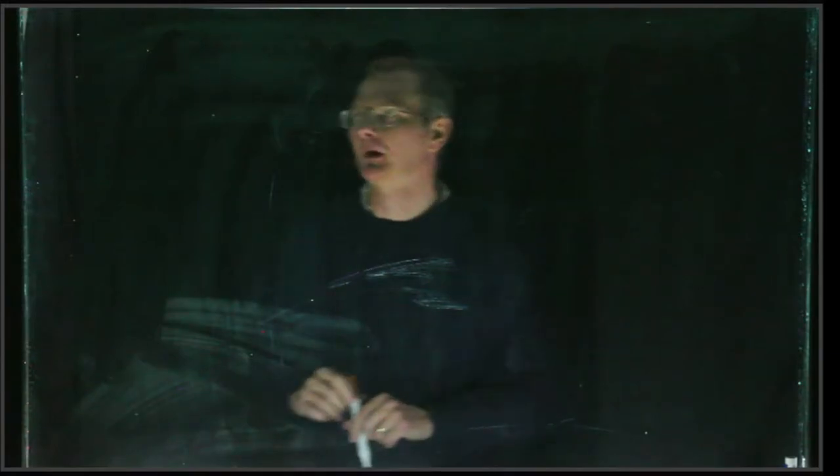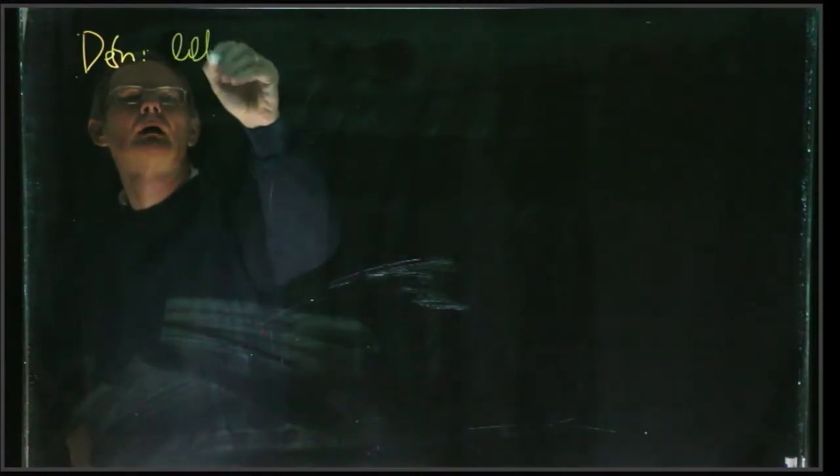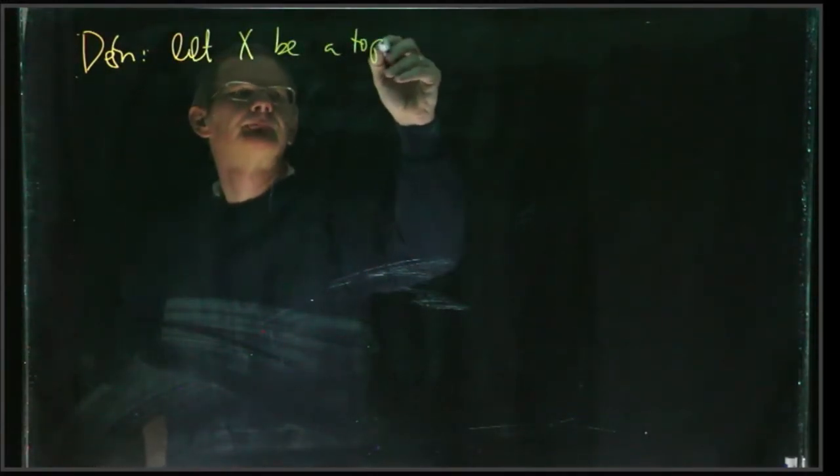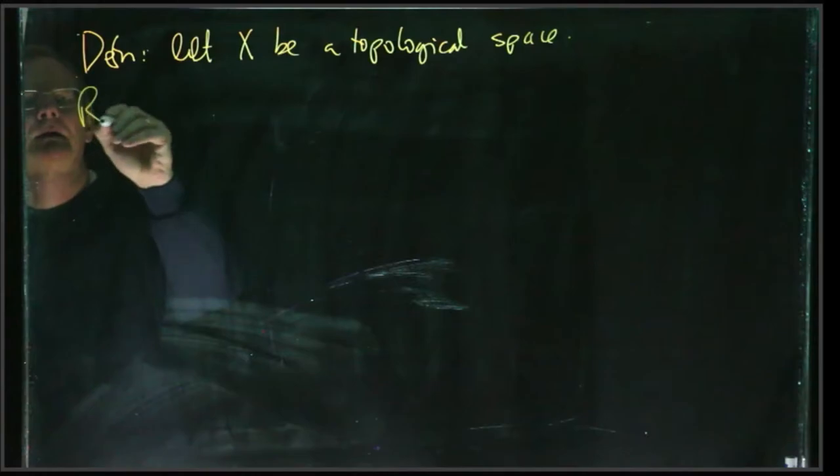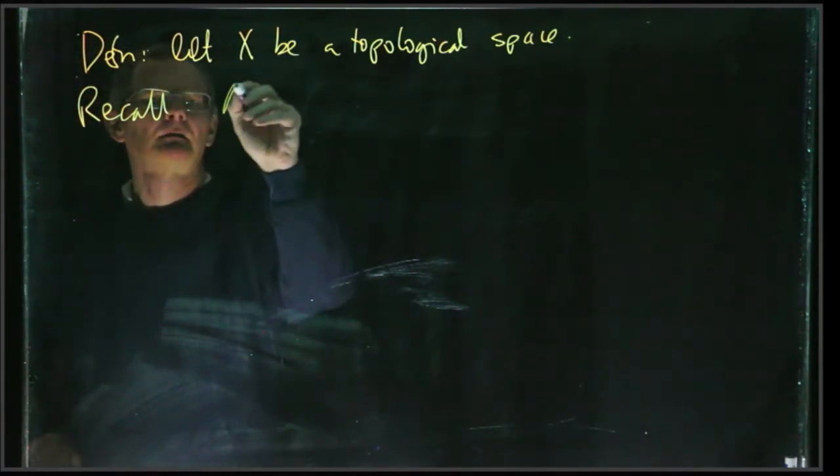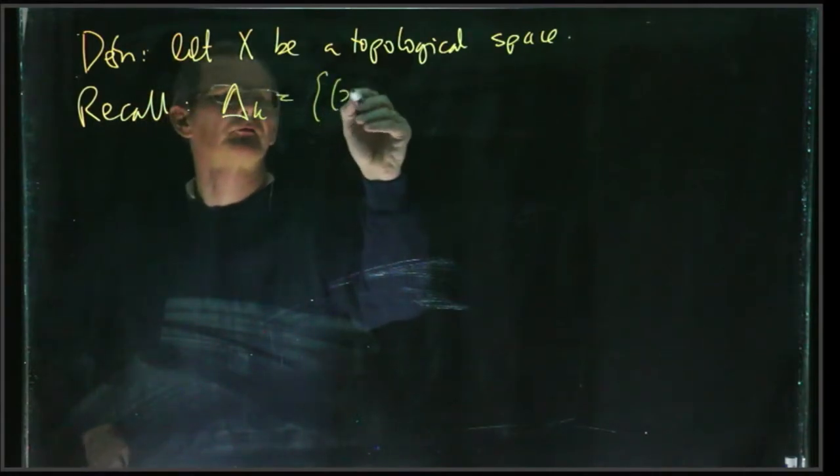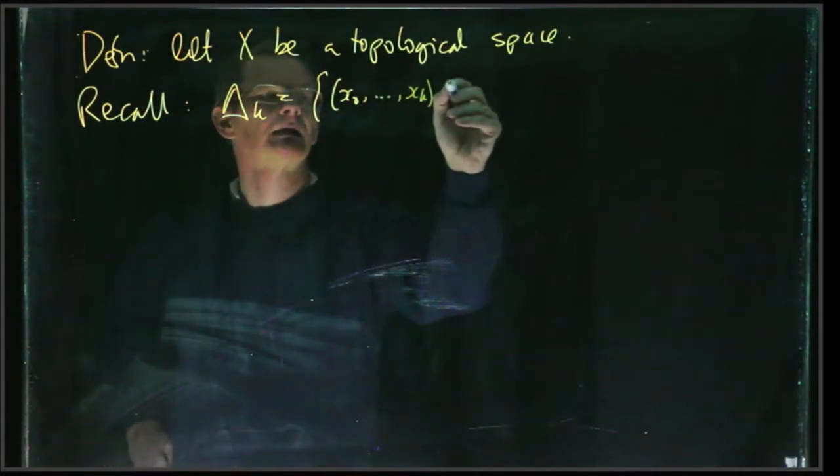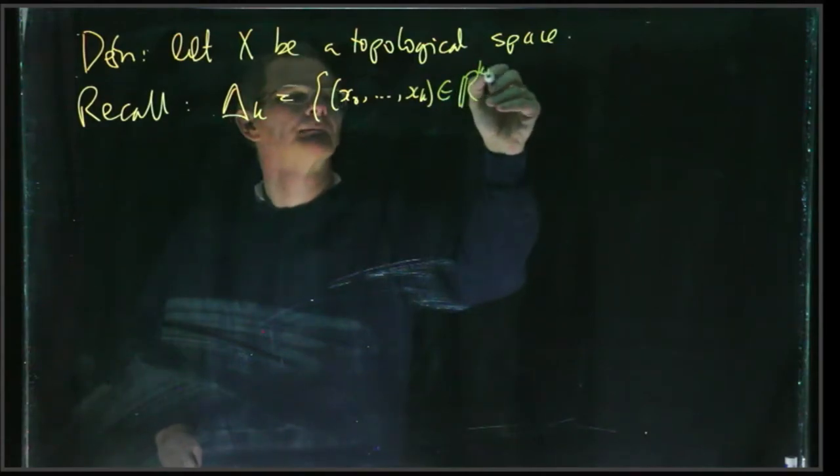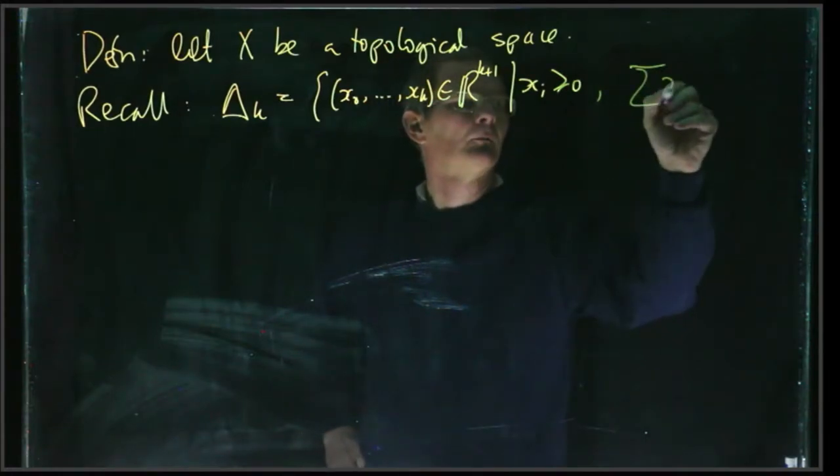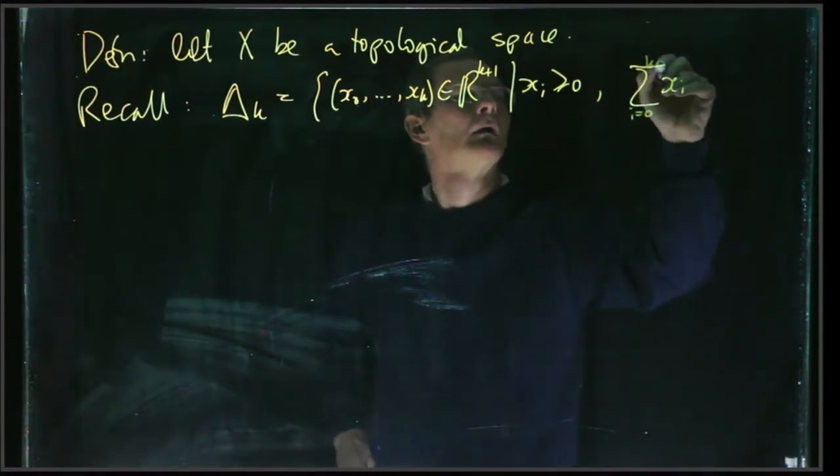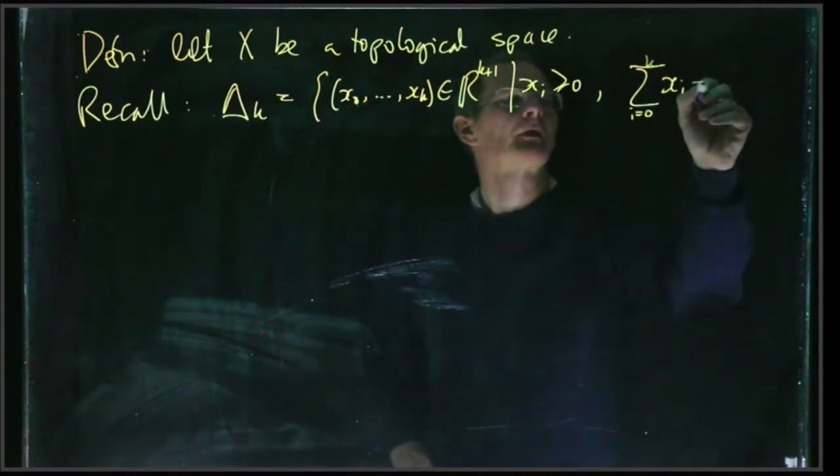And so now we're ready to start with the basic formal definitions of homology theory. So let X be a topological space, and let's recall Δₖ, the k-simplex, so that's the set of points (x₀, ..., xₖ) in ℝᵏ⁺¹, where all these coordinates xᵢ are non-negative and the sum of the coordinates is equal to 1.